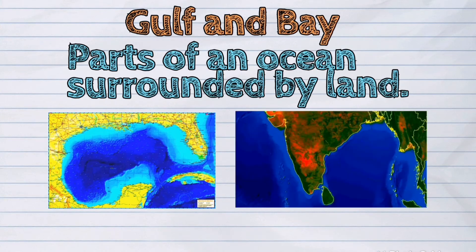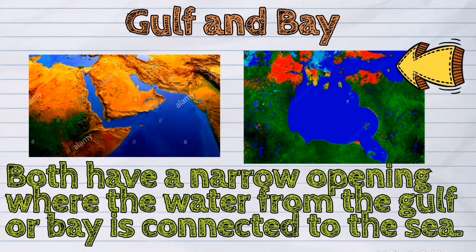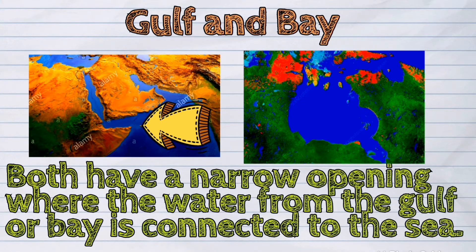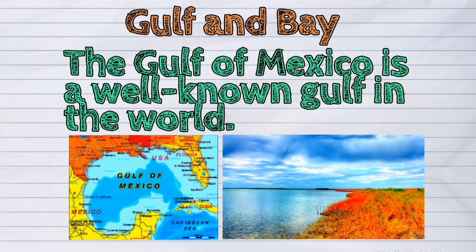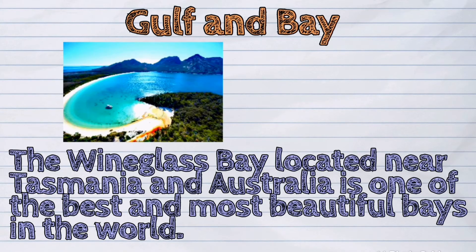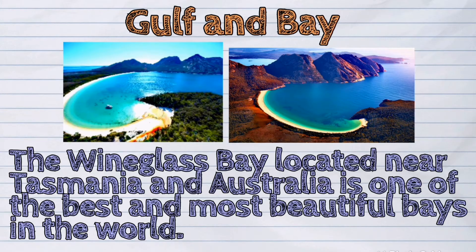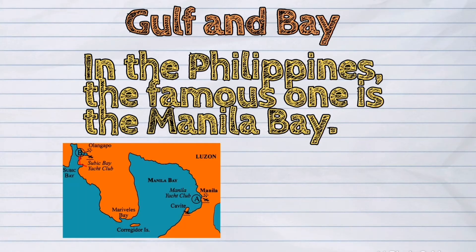The Gulf and Bay are parts of an ocean surrounded by land. Although a Gulf is bigger than a Bay, both have a narrow opening where the water from the Gulf or Bay is connected to the sea. This opening is known as a strait. The Gulf of Mexico is a well-known Gulf in the world; in the Philippines, there is the Lingayen Gulf. The Wineglass Bay located near Tasmania, Australia, is one of the best and most beautiful bays in the world. In the Philippines, the famous one is Manila Bay.